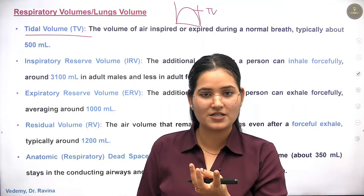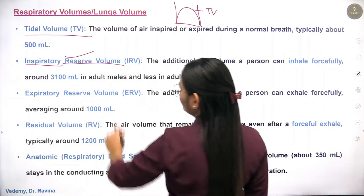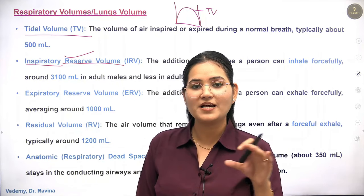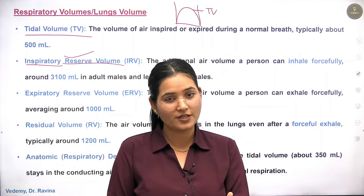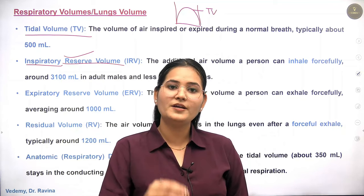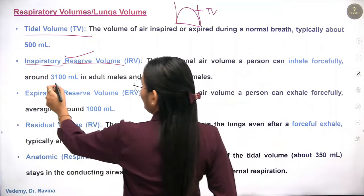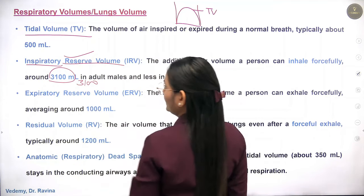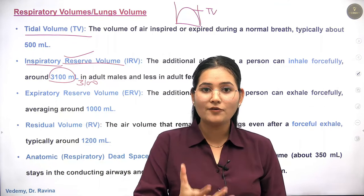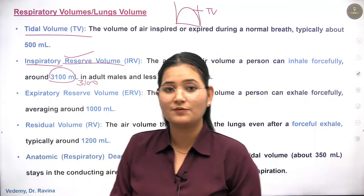The second volume is inspiratory reserve volume. The name 'reserve' means this is the extra inspiratory volume beyond tidal volume. You keep it in reserve because it is extra. Inspiratory reserve volume is the volume you can forcefully inhale above tidal volume. For example, in tidal volume you inhale 500 ml, but with inspiratory reserve volume you can forcefully take in 3100 ml.